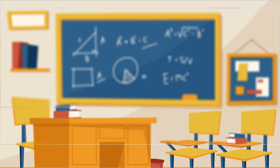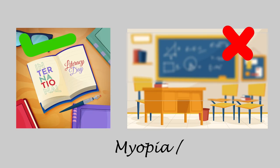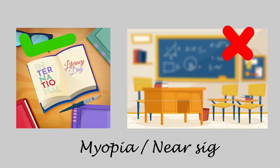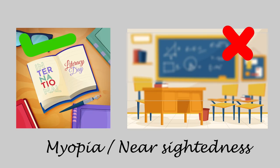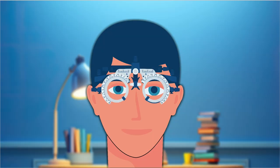Do you find it difficult to see the writing on the board clearly while you can easily read the text in a book? If so, this may be a symptom of myopia or nearsightedness. In this session, we will explore what myopia is, how it develops, and the ways to manage it.